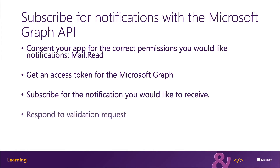When a subscription is created, Microsoft Graph will immediately submit an HTTP POST to the endpoint registered in the subscription. The endpoint you specify must respond within five seconds to confirm it is valid and working. This request includes a value in the URL as a query parameter, and your confirmation response must take that value and return it as a string in the body of the response.